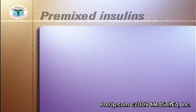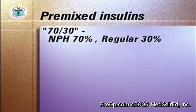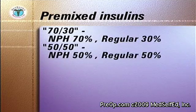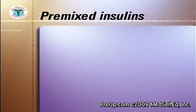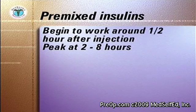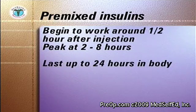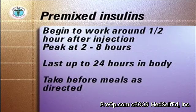There are three stable pre-mixed formulations of insulin. One contains 70% NPH insulin and 30% regular insulin. Another formulation contains 50% NPH and 50% regular insulin. The third contains 75% NPH and 25% Humalog. These mixtures begin to work around half an hour after injection, peak in 2 to 8 hours, and last up to 24 hours in the body. As these pre-mixed insulins contain rapid or very rapid-acting insulin, they should be taken before meals as directed by your medical team.